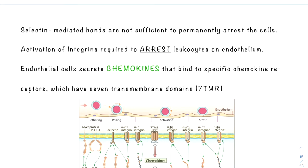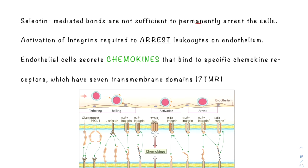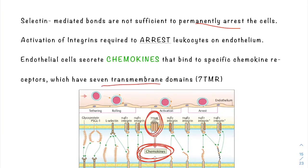The selectin-mediated bonds are not sufficient to permanently arrest cells — what is needed is an activated integrin to permanently arrest leukocytes on the endothelium. To activate integrins, you need chemokines secreted by the endothelial cells. Endothelial cells secrete chemokines that bind to specific chemokine receptors called seven-transmembrane receptors (7-TMRs), named for their seven transmembrane domains.